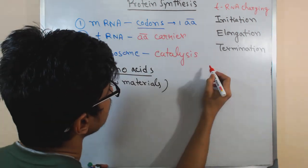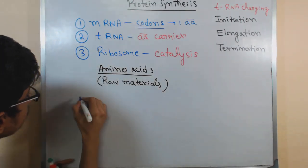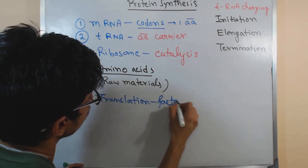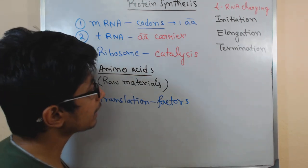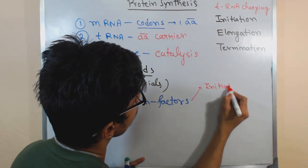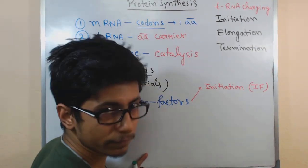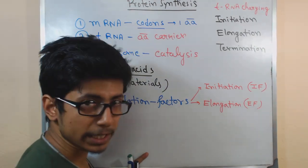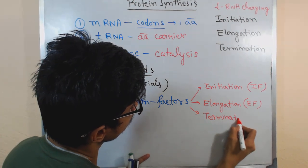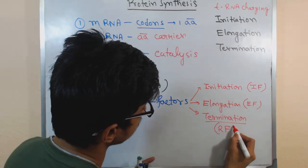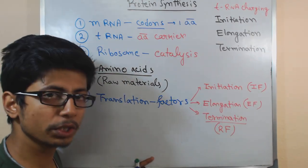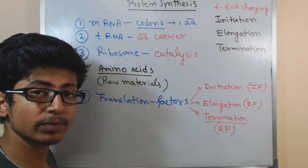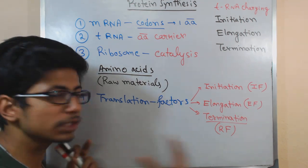Translation factors are of different types. There are initiation factors, termed IF, specific for the initiation stage. There are elongation factors, termed EF, for the elongation stage. And there are release factors, termed RF, for termination. These are the different factors required for protein synthesis to occur properly. Now let us look at the basic overview of how this protein synthesis works.